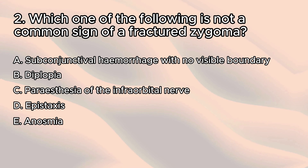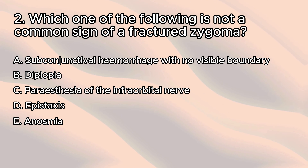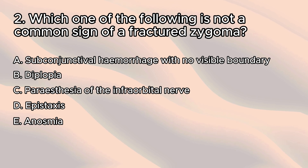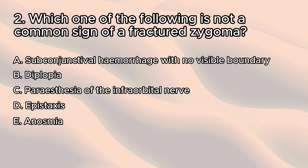Subconjunctival hemorrhage — a bloodshot/bleeding eye — and diplopia, which is double vision, are both very commonly associated with a fractured zygoma. Paresthesia of the infraorbital nerve is also highly likely, as the infraorbital nerve exits through the infraorbital foramen on the zygoma. Epistaxis, or nosebleeds, is common due to the maxillary sinus. Anosmia, which is loss of smell, is not really associated with a fractured zygoma. The correct answer is E.